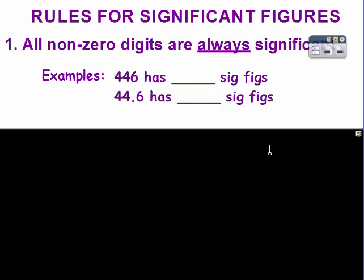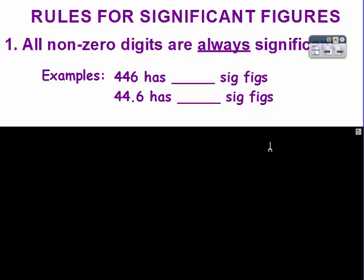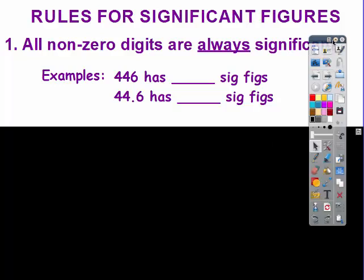The rules for significant figures: the first rule says that all non-zero digits are always significant. So 446 has three significant figures because all of the numbers would count. In the second example, although there's a decimal, all the numbers still count, so that's three significant figures.